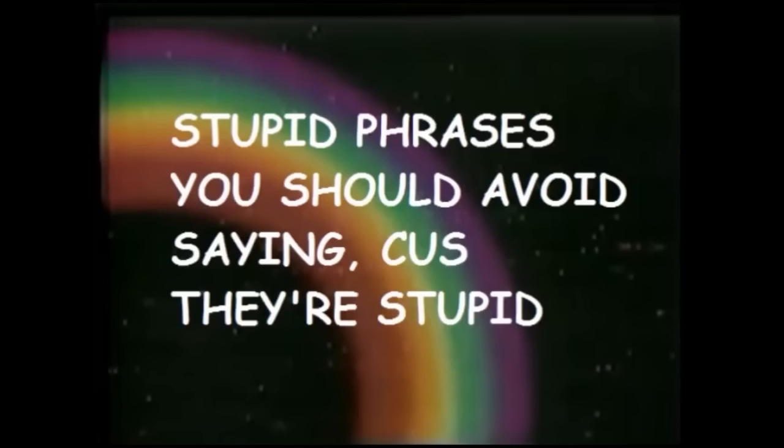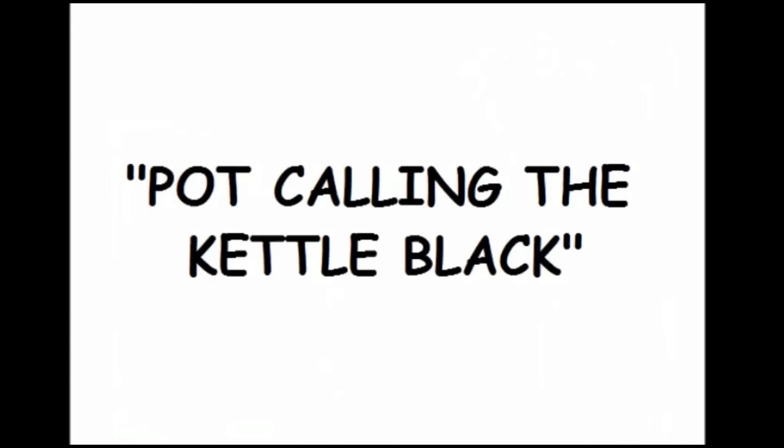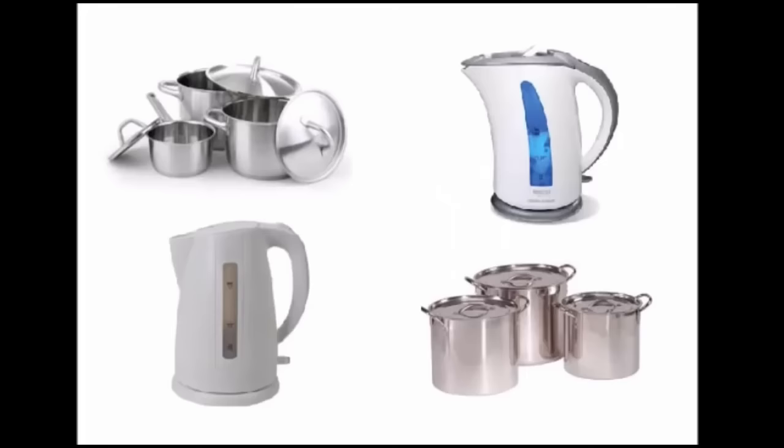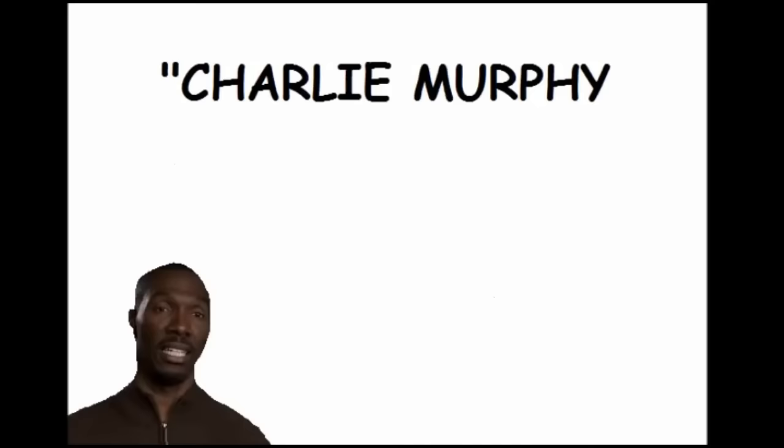Some phrases in the English language make like no sense. So to prevent you from sounding like an idiot in front of your friends or your peers, I'm gonna tell you some of the ones that you should avoid. Pot calling the kettle black. People don't really use this on a daily basis, but it is very commonly used. The phrase basically means, oh, you're a bit of a hypocrite. But here's the thing - pots aren't black. And neither are kettles. Do these look black to you? No, they don't. They're not even remotely black. So what should the phrase be? Charlie Murphy calling Wesley Snipes black. That's what the phrase should be.